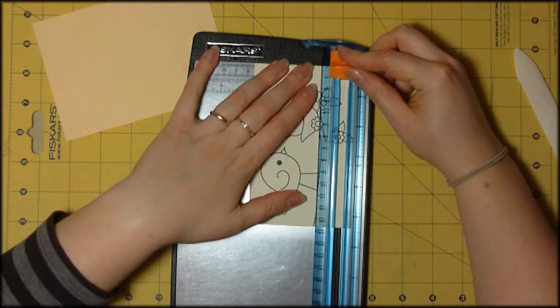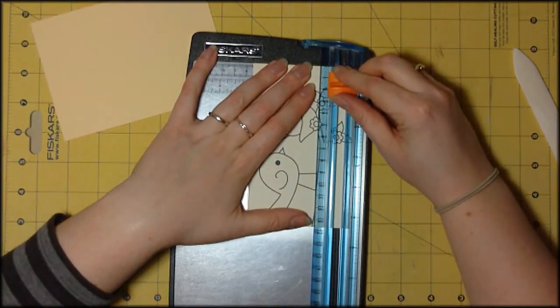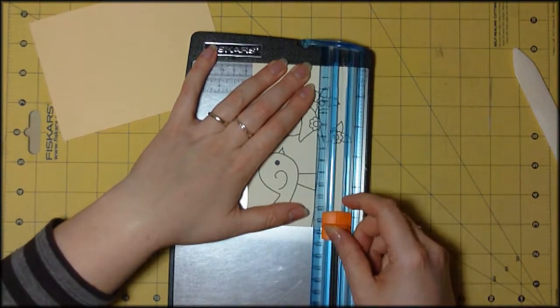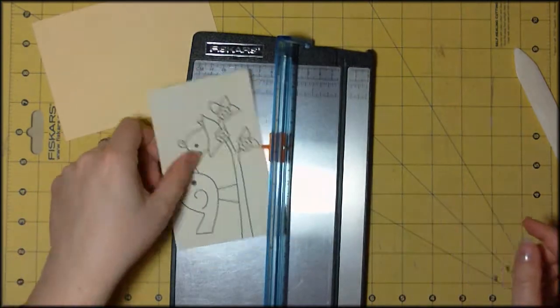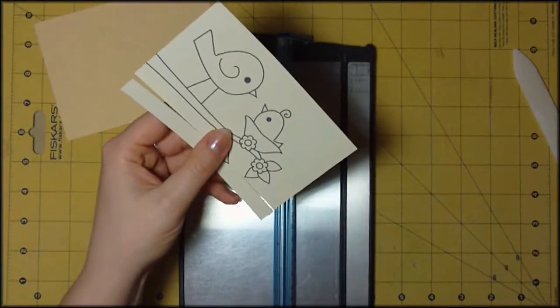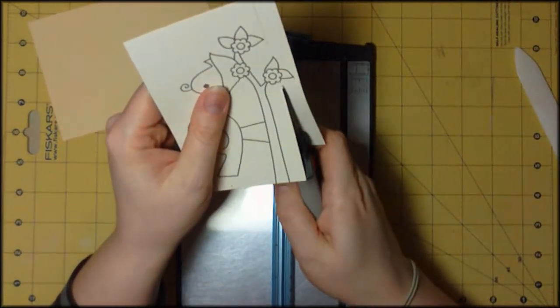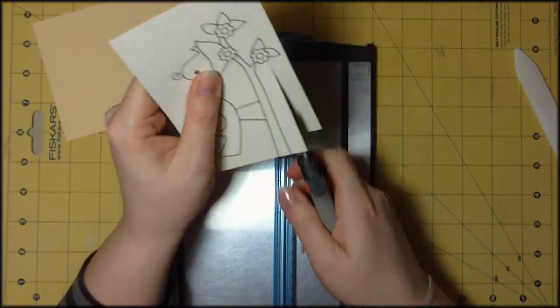I'm just going to cut up to the design on both sides here. You can see me doing that, then lifting the cutter. I'm doing it again on the other side so I've just got that little bit of design still sticking out where I haven't cut along.